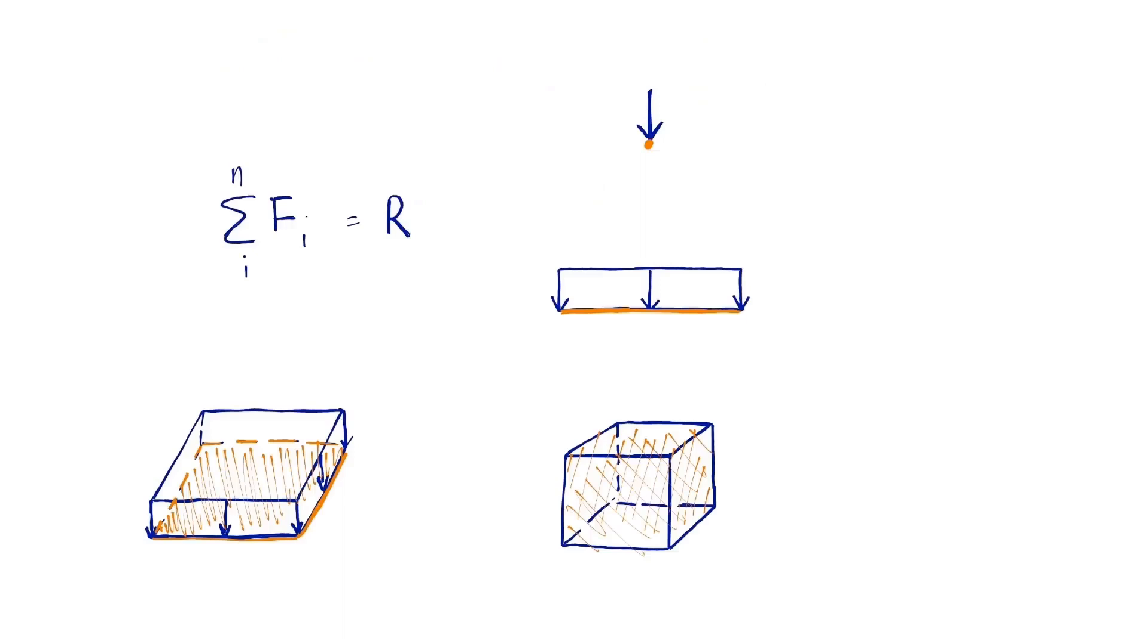The force vector sum in the form of single, line, surface, or solid loads is referred to as the resultant R.